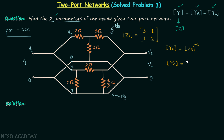The Y parameters of network NA are: Y11A = 2/5, Y12A = −1/5, Y21A = −1/5, and Y22A = 3/5.